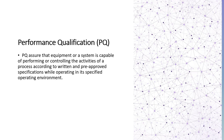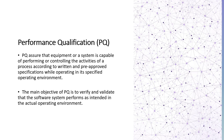Now in this slide, we will discuss about the performance qualification for computerized system. Performance qualification assures that equipment or a system is capable of performing or controlling the activities of a process according to written and pre-approved specifications while operating in its specified operating environment. The main objective of performance qualification is to verify and validate that the software system performs as intended in the actual operating environment.